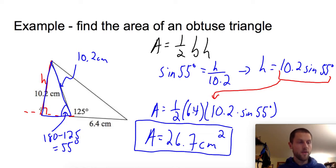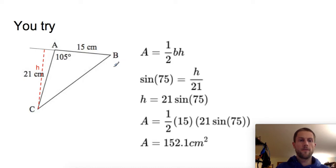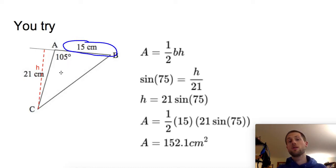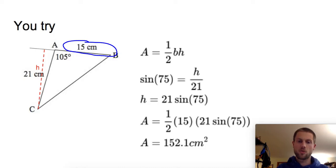Here's another you-try example — give that one a shot, pause the video, and then check your answer. For this one, I called one side my base and dropped an altitude. You could also use the 21-centimeter side as the base and drop an altitude from angle B — either approach works. Check through the work to see how I found the height and used it to find the area of the triangle.